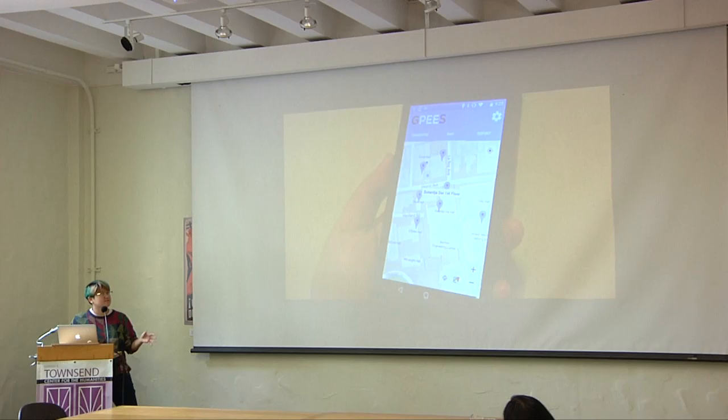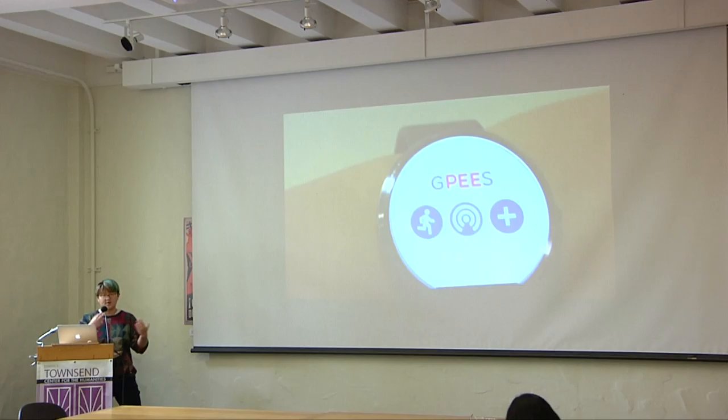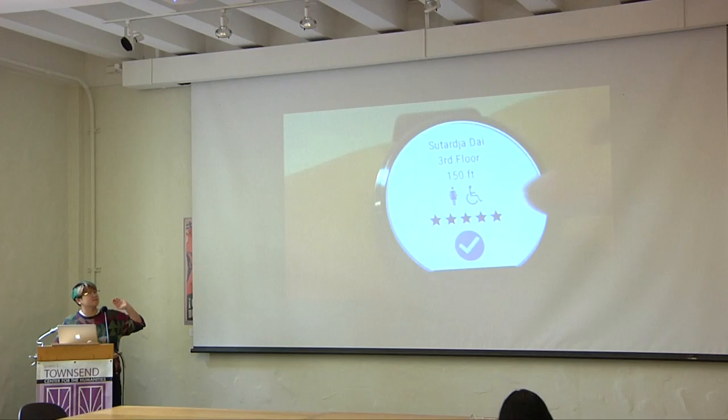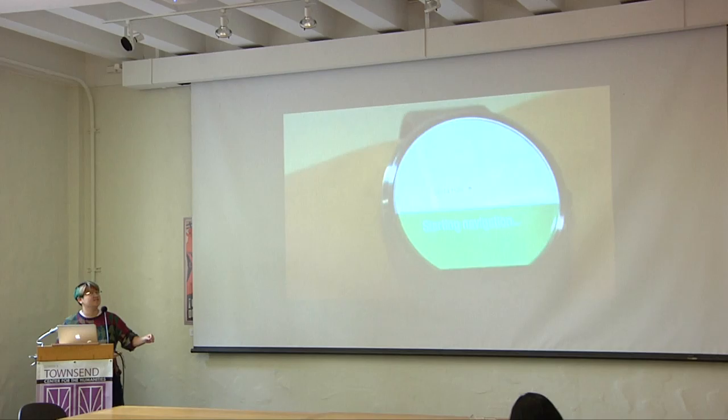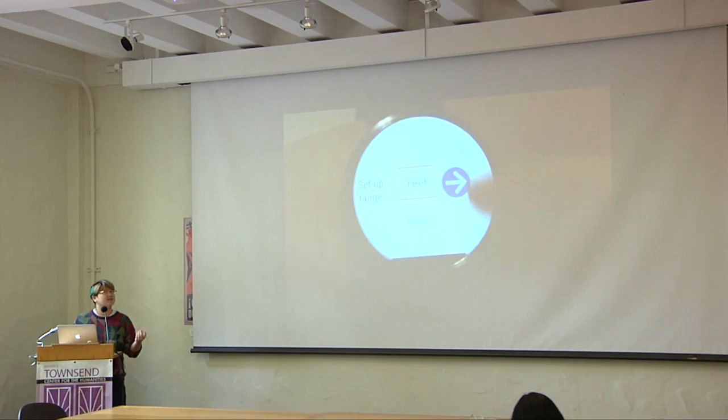However, the crux of this app was on the Android Wear side because we really wanted to focus on instantaneous, let me show you where restrooms are right now. So we divided it into three modes. The first one was active mode, which upon query, would bring you a list of all relevant restrooms. If you selected one, it would use Google Maps to route you to where that restroom was.